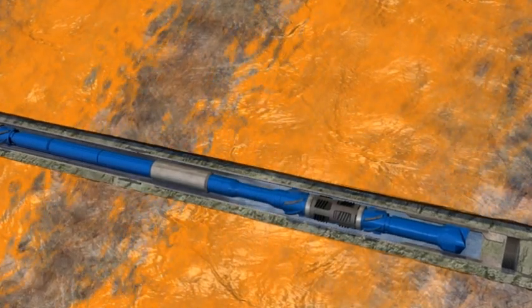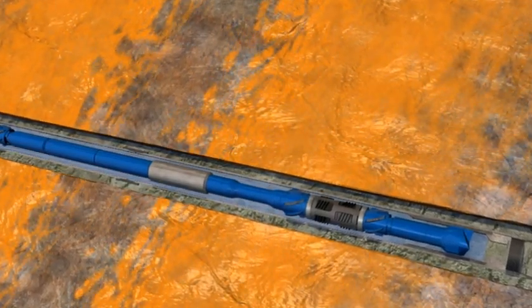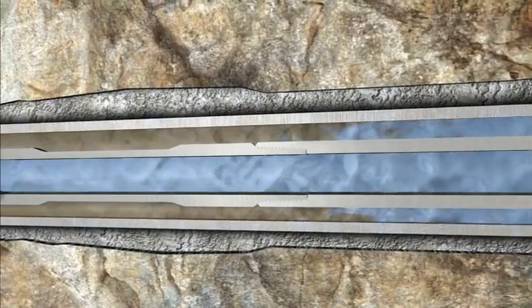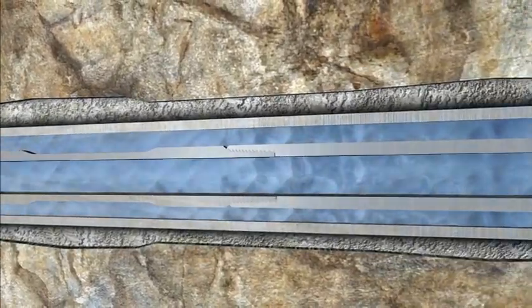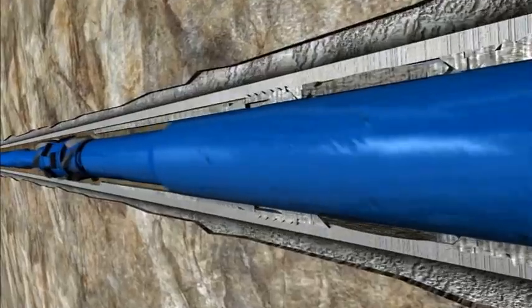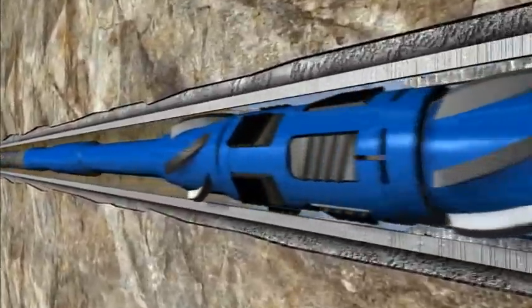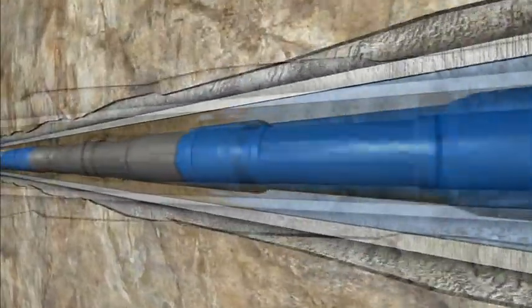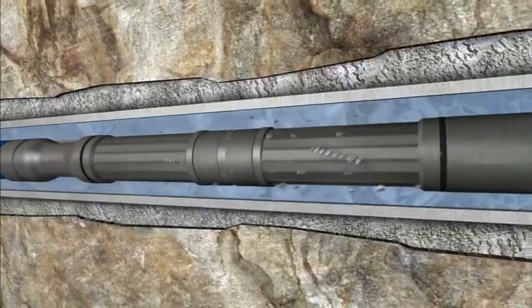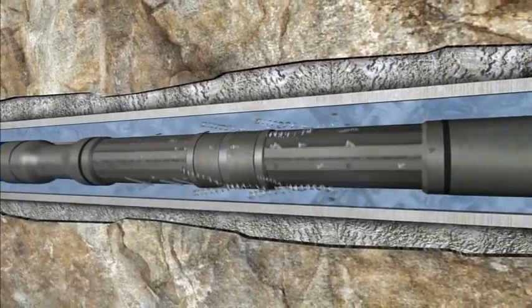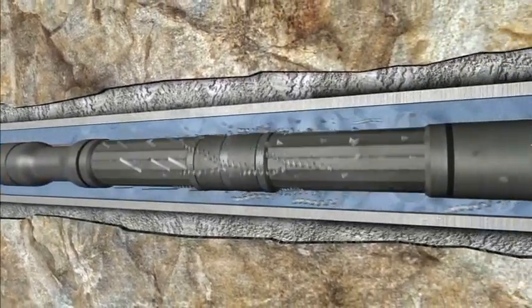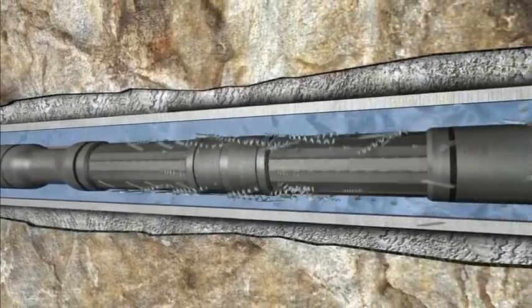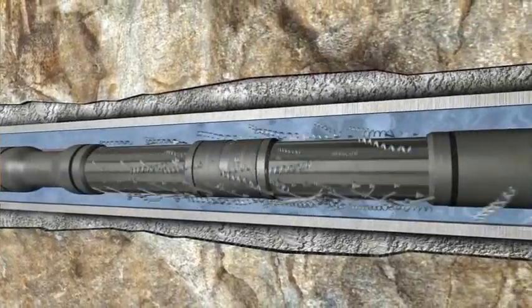After dressing off the liner top, the well is then circulated to remove any cuttings and debris. The drilling mud or contaminated completion fluid is displaced from the well to remove as much debris as possible. As the fluid is circulated through the bottom of the work string, the Grabits downhole magnets will collect any metal shavings that may have resulted from milling the shoe track.